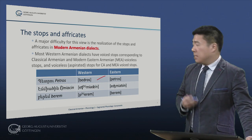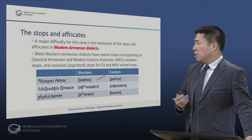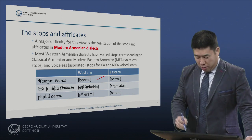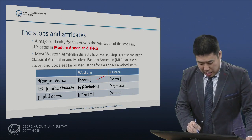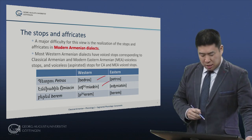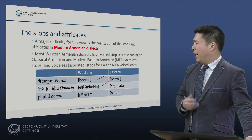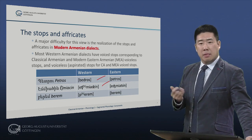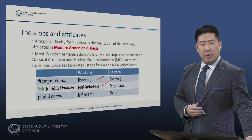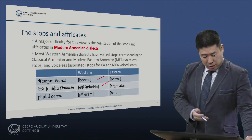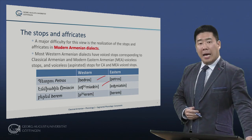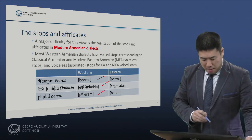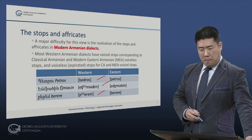The seat of the Armenian Apostolic Church, Ejmiadzin in Eastern Armenian, is Etchmiadzin in Western Armenian, which is why it is often transcribed as such in the Latin alphabet. And to give another example, Berem, meaning 'I carry' or 'I bring', is in Western Armenian Perem.